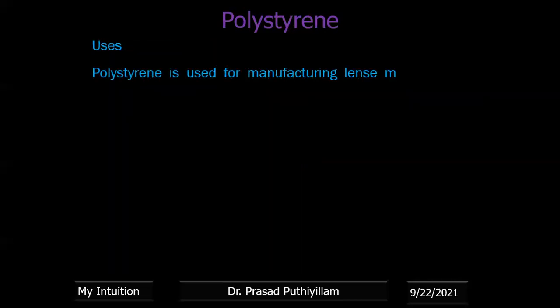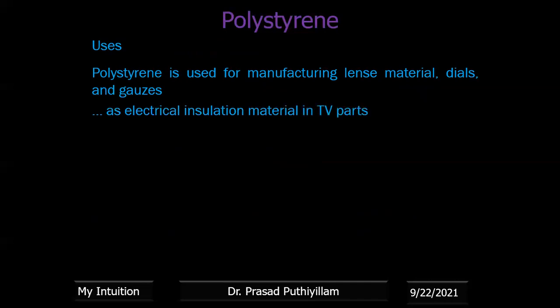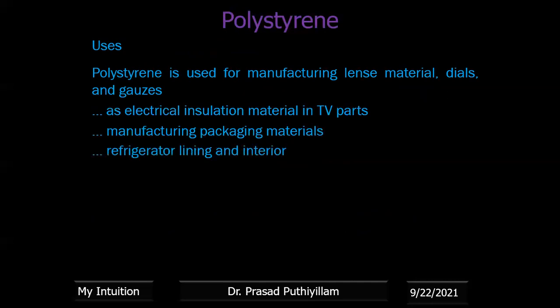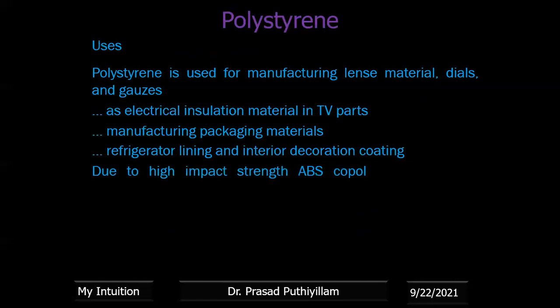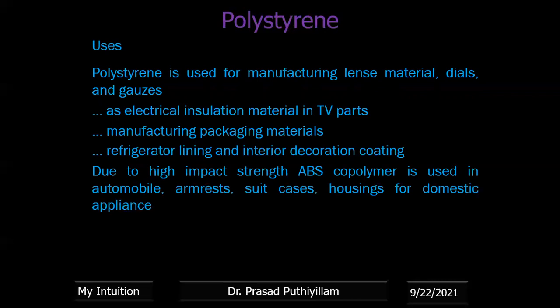Polystyrene is used for manufacturing dials, gauges, electrical insulation materials, and TV parts, as well as packaging materials, refrigerator lining, and interior decoration coatings. Due to its high impact strength, the ABS copolymer is used in automobile armrests, suitcases, housings, and domestic applications where high impact strength is required — meaning the material should not break when struck or dropped.